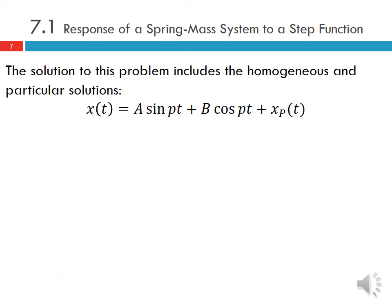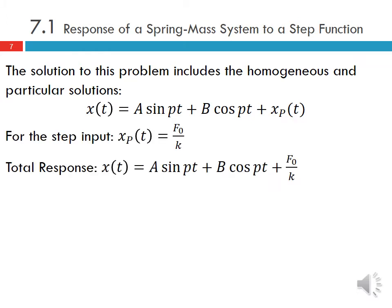The solution to this problem includes the homogeneous and particular solutions. For the step input, our particular solution is F₀ over k. So the total response is A sine(pt) plus B cosine(pt) plus F₀/k, where A sine(pt) plus B cosine(pt) should be familiar from the homogeneous equation in the free vibration case.